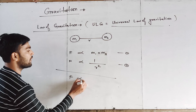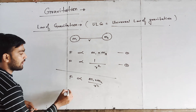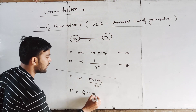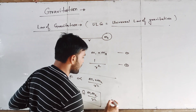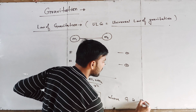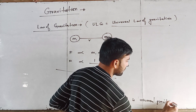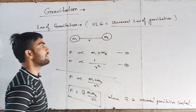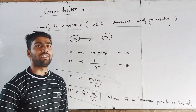Thus, F is proportional to M1 times M2 divided by R squared. And hence, F equals G times M1 times M2 divided by R squared. Where G is the universal gravitational constant. This is the universal law of gravitation.